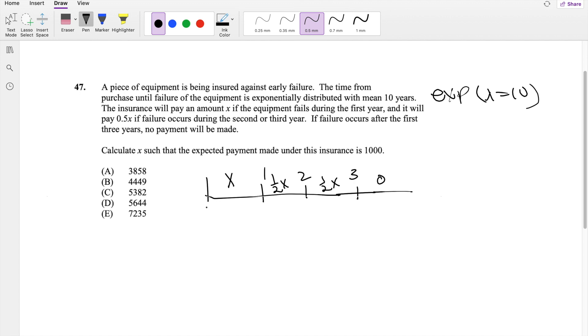And calculate X such that expected payment made under this insurance is $1,000. So they're saying find expected payment, I'm going to note Y as payment, such that it's less than or equal to $1,000.